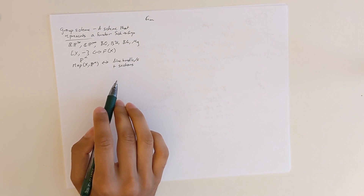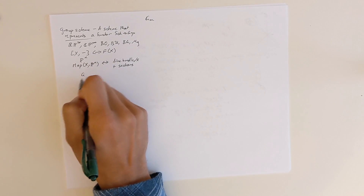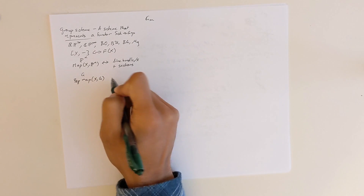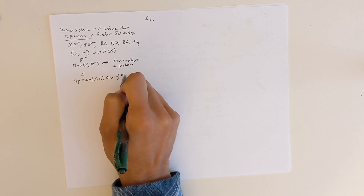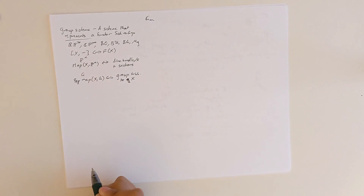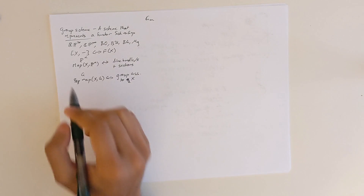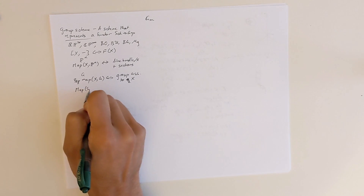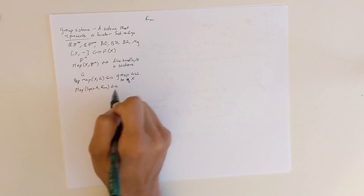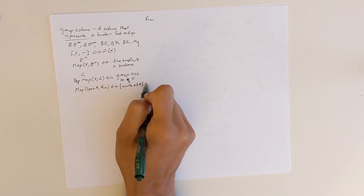A group scheme falls into this category where you have some group scheme G, and maps from some space X to G form a group. In this example I'll be looking at G_m. Specifically, we'll see that maps from spec A to this group scheme G_m will be in one-to-one correspondence with the set of units of A, written A-cross.